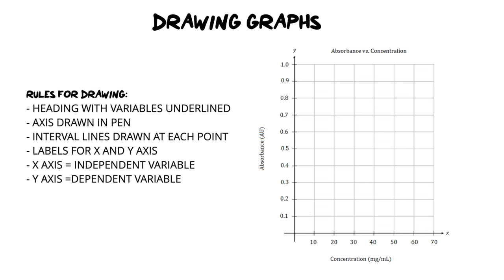When drawing any kind of graph, we always start off with a heading and it must have both sets of variables in it — the independent and the dependent variable. Those variables must then link to the actual graph itself. The heading is generally written at the top of the graph. Your heading should always say something like 'graph showing absorbance versus concentration.' In that heading you also tell the marker what kind of graph it is: a bar graph, a line graph, a histogram — what is it?